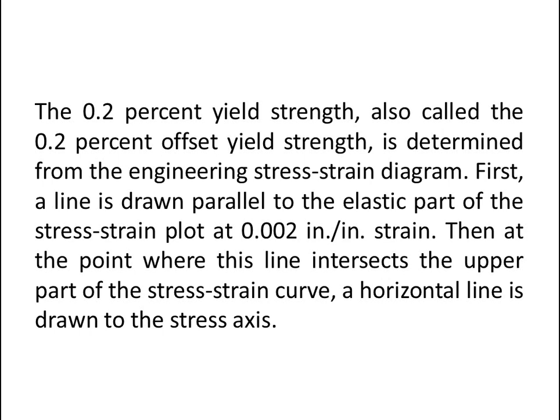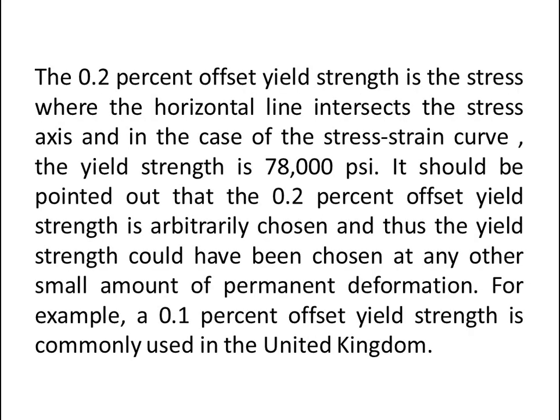At the point where this line intersects the upper part of the stress-strain curve, a horizontal line is drawn to the stress axis. The 0.2% offset yield strength is the stress where the horizontal line intersects the stress axis — in this example, the yield strength is 78,000 psi. It should be noted that the 0.2% offset yield strength is arbitrarily chosen; for example, a 0.1% offset yield strength is commonly used in the United Kingdom.